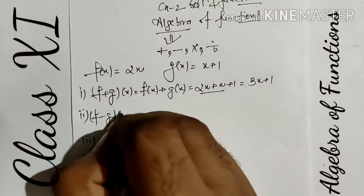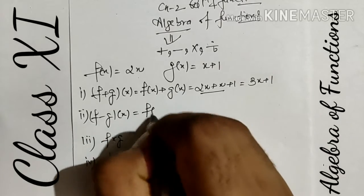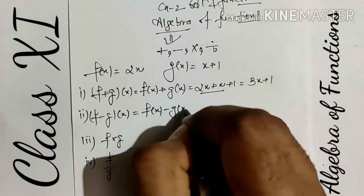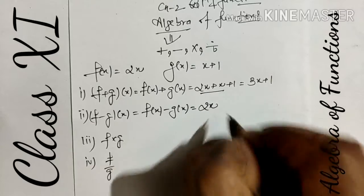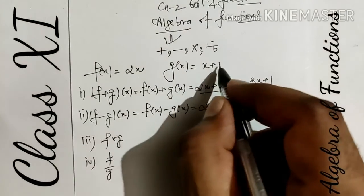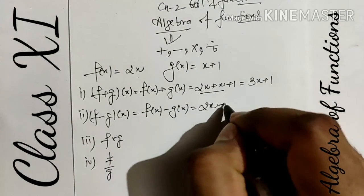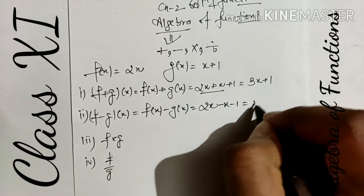f minus g: we need variable x, so it can be written as f(x) - g(x). The value of f(x) is 2x, g(x) is given by x+1 but with negative sign, so symbols change. We get overall x-1.